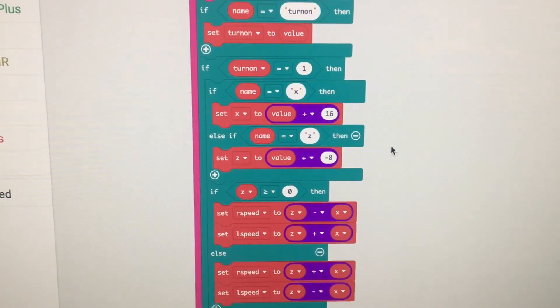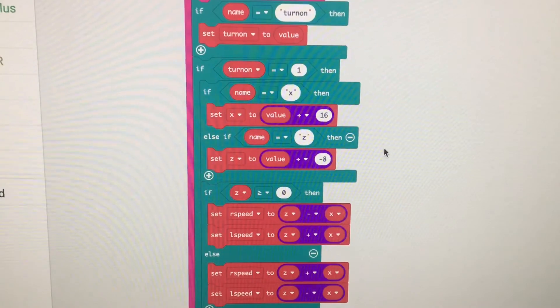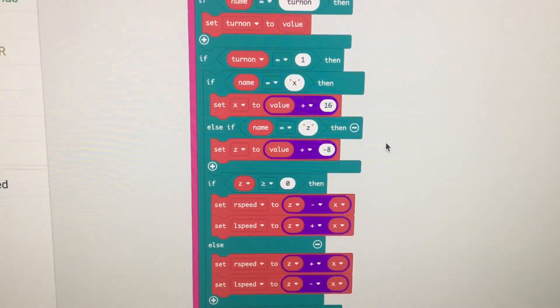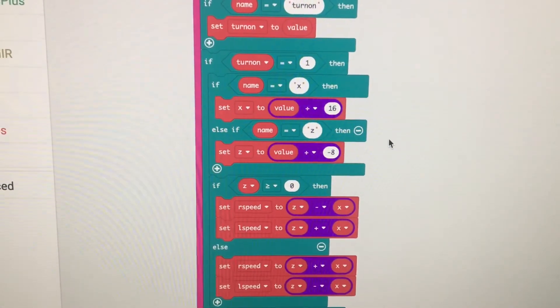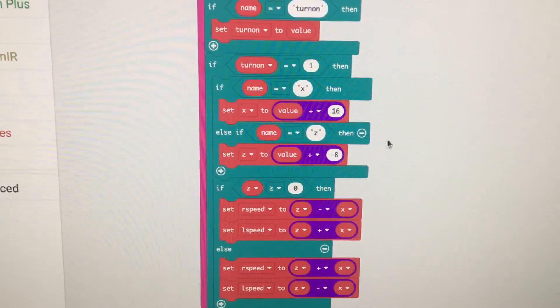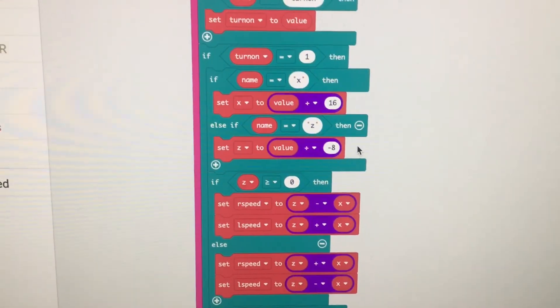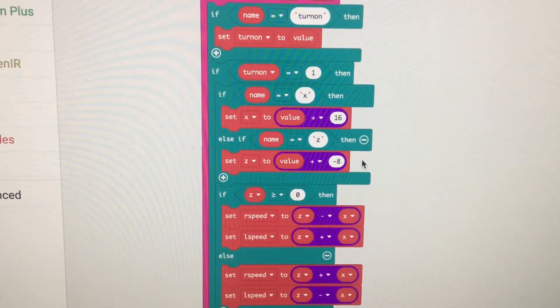If the variable received is z, then set the z value to the value specified. And this is used for forwards and backwards speed. And I divide it by negative 8 to scale it down. And I reverse the direction because it has tilting forward being negative and tilting backwards being positive. So I switch that around.